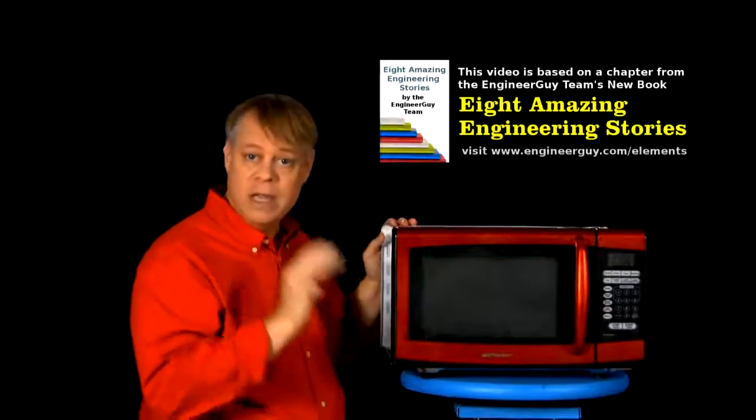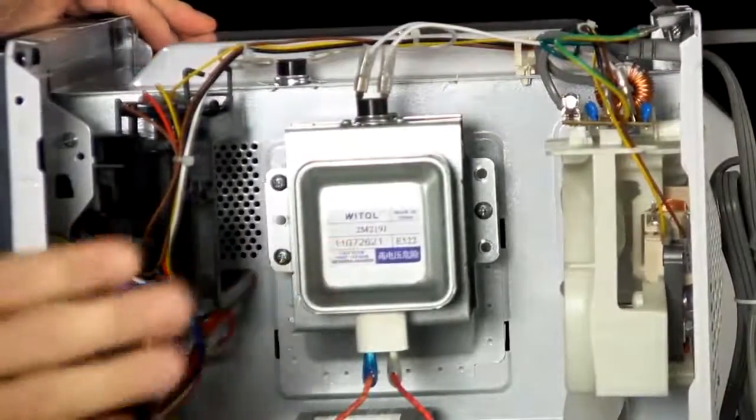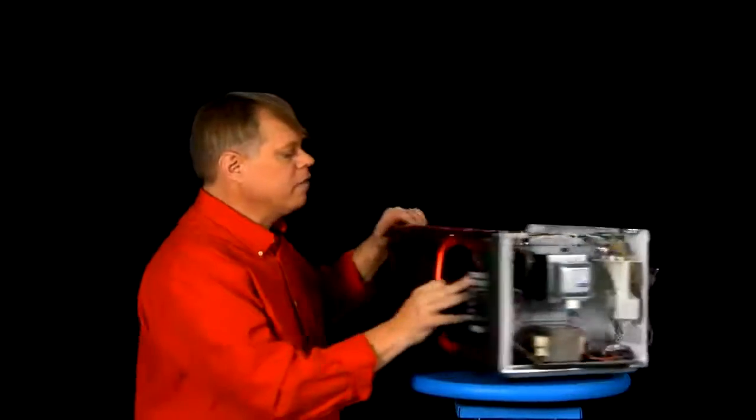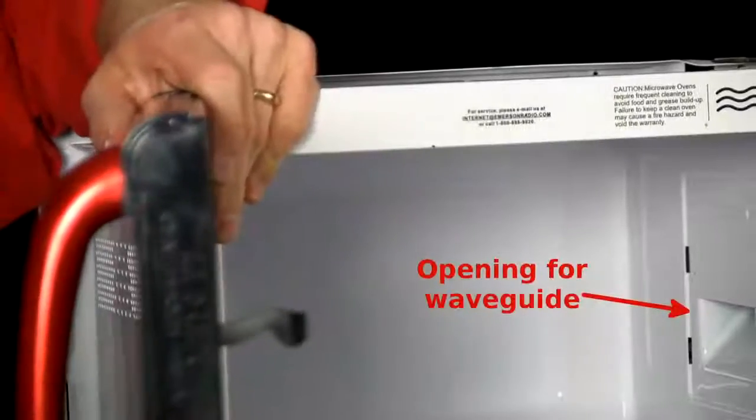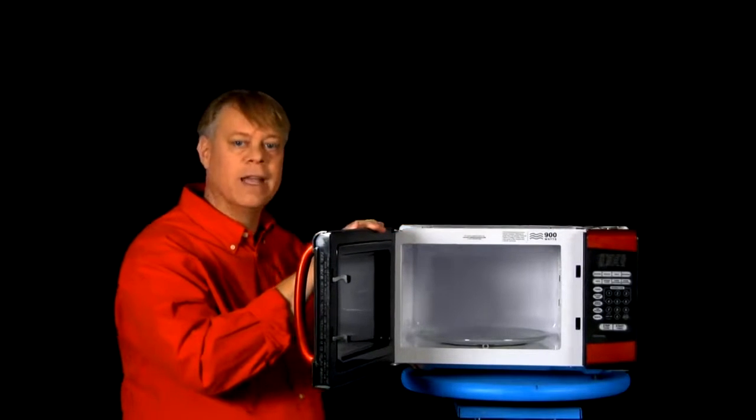Now, a microwave contains three main components. A vacuum tube called a magnetron - it generates the energy that heats food. A wave guide hidden in the wall to direct that energy to the food. And a chamber to hold the food and safely contain the microwave radiation.